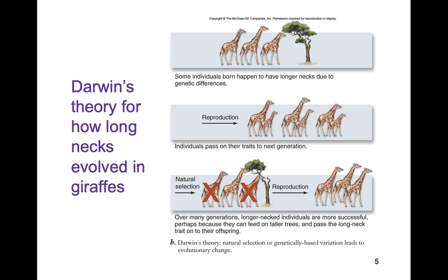We used giraffes to talk about how species change over time. Darwin said there'd be variation amongst the neck lengths of giraffes — some with longer necks than others. Those giraffes with longer necks were able to reach leaves up in the tall parts of the tree, while those with shorter necks weren't. Those that could reach the leaves would survive and pass their genes on; those too short to reach the leaves would die.